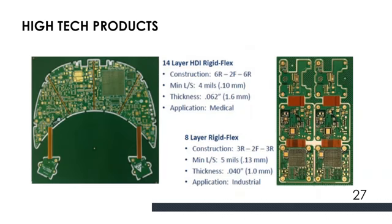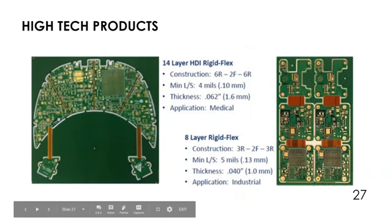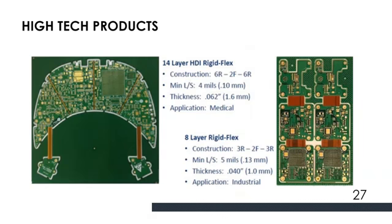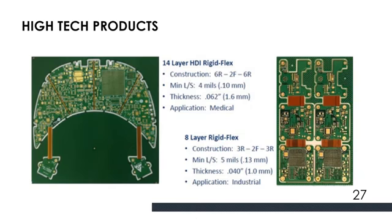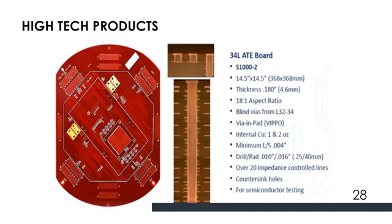These are rigid-flex PCBs — 6 rigid layers on either side and 2 flex layers with a line width of 4 mil, 62 mil overall. Some are for medical applications. Another example: 3+2+3, 5 mil lines, thickness around only 40 mil, for industrial applications. These are very high aspect ratio boards.